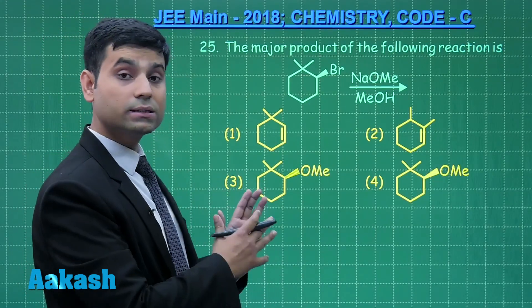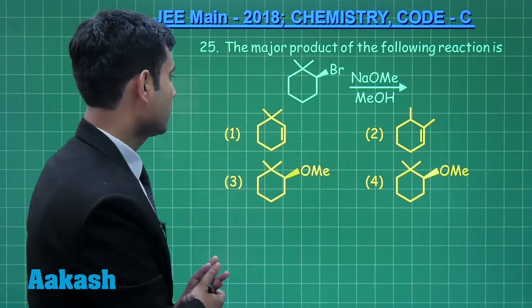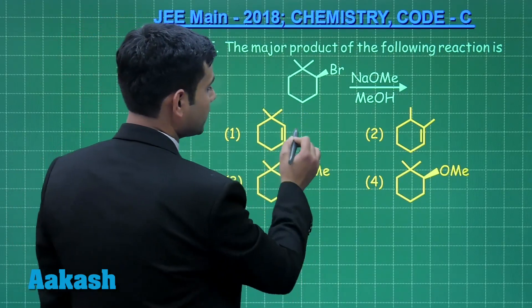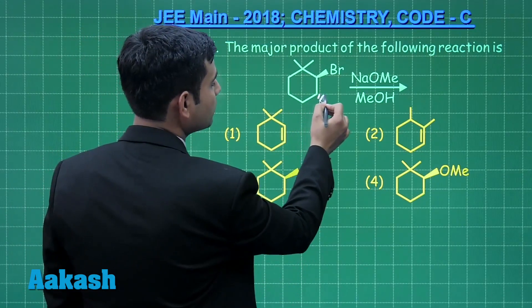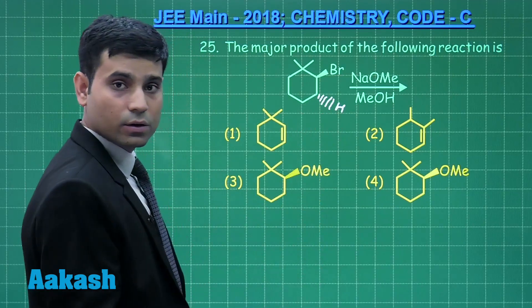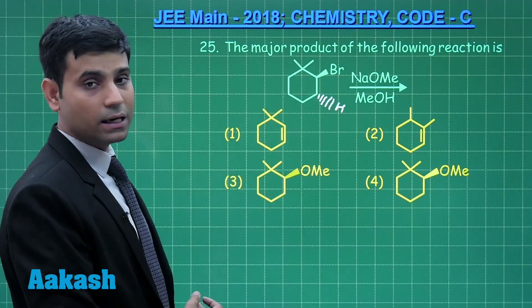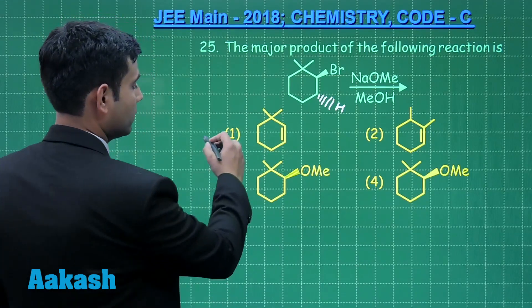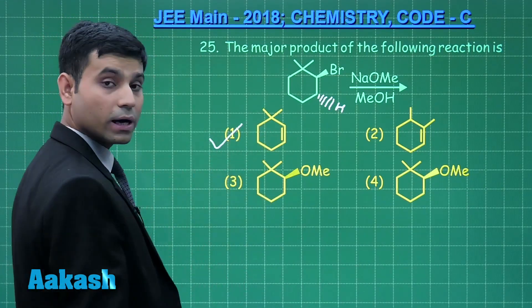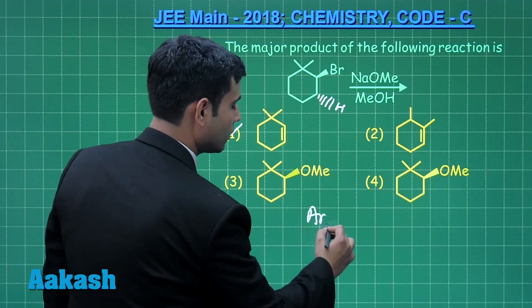Students, this is E2 elimination reaction because we have a very strong base present here. The E2 elimination will take place from this position where we have hydrogen, so elimination of HBr takes place resulting in the formation of product 1. So the correct answer for this question is option 1.